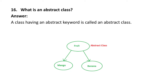Next question: what is an abstract class? A class having an abstract keyword is called an abstract class. For example, taking two classes — mango and banana — we can prepare a parent class called 'fruit', and that fruit class can act as an abstract class.